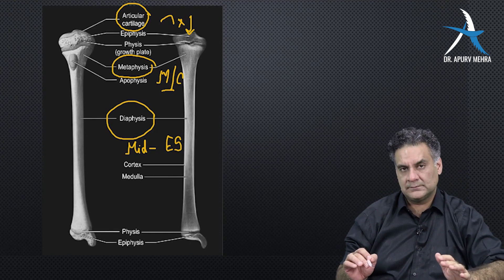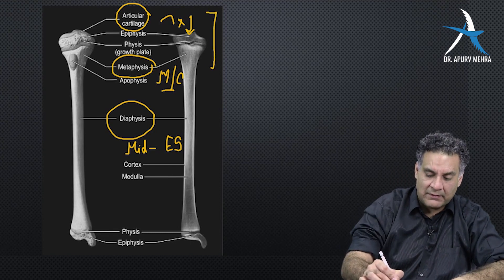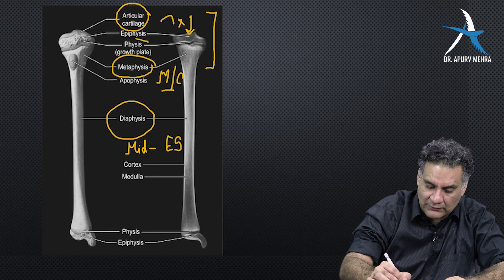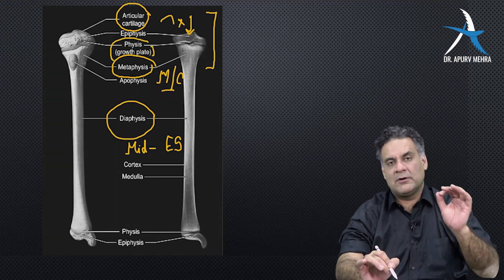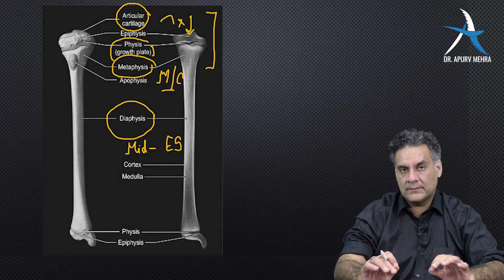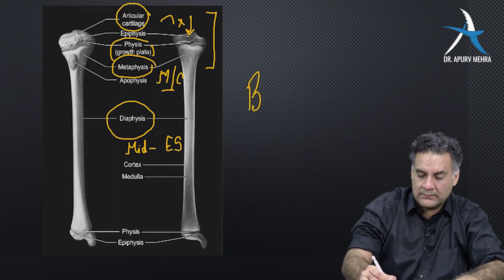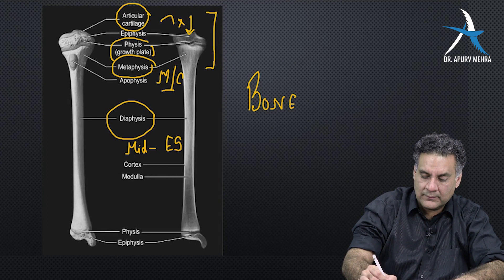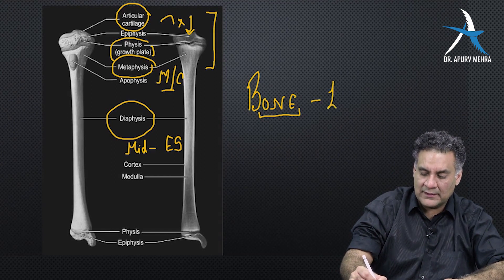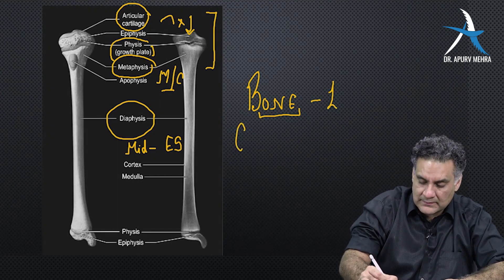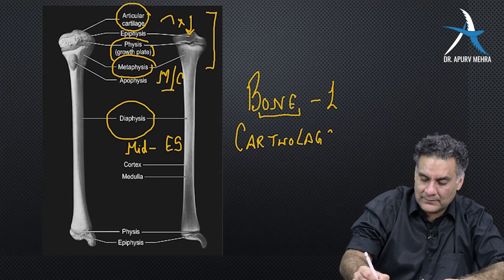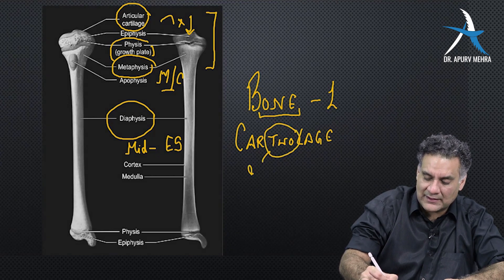The upper end is the epiphysis, then the metaphysis, and in between is the growth plate called the physis. The physis is also made of cartilage, so it's not seen on x-rays — it's radiolucent. As a mnemonic: bone has the word 'one' in it, so it has type one collagen; cartilage has 'two' letters in a visual pattern, so it has type two collagen.